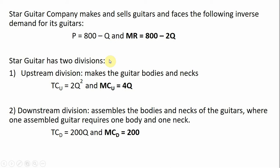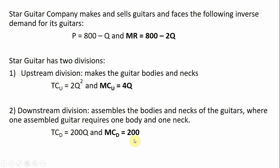This company has two divisions: an upstream division that makes the guitar bodies and necks, with a cost structure where total cost equals 2Q squared. The derivative gives us the marginal cost for the upstream division. The downstream division assembles the bodies and necks into the final guitars, where one assembled guitar requires one body and one neck. The downstream division's marginal cost of assembly is a constant $200.